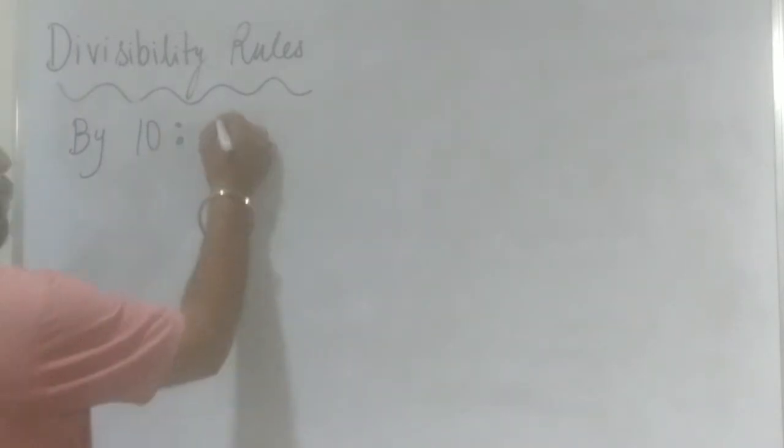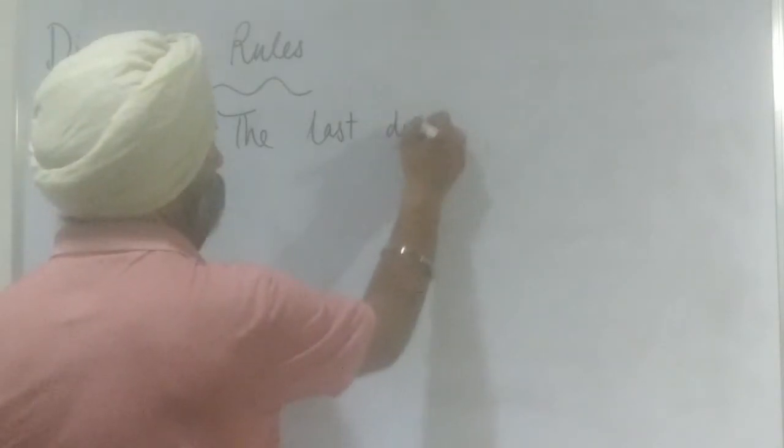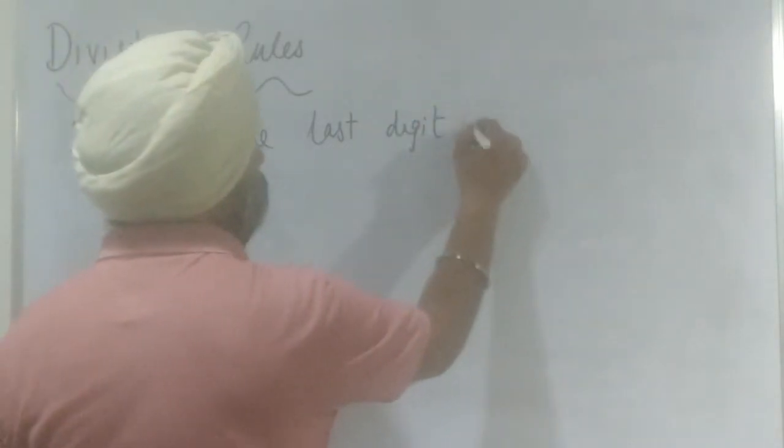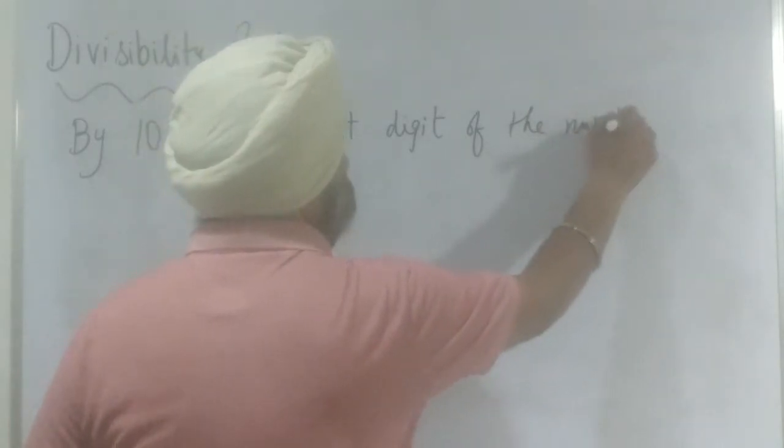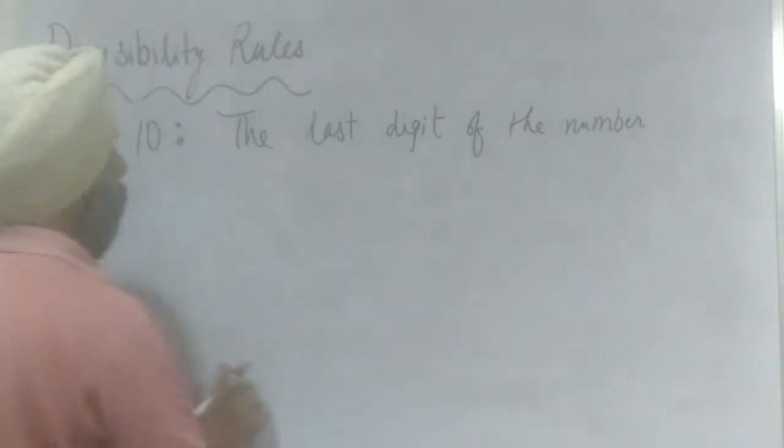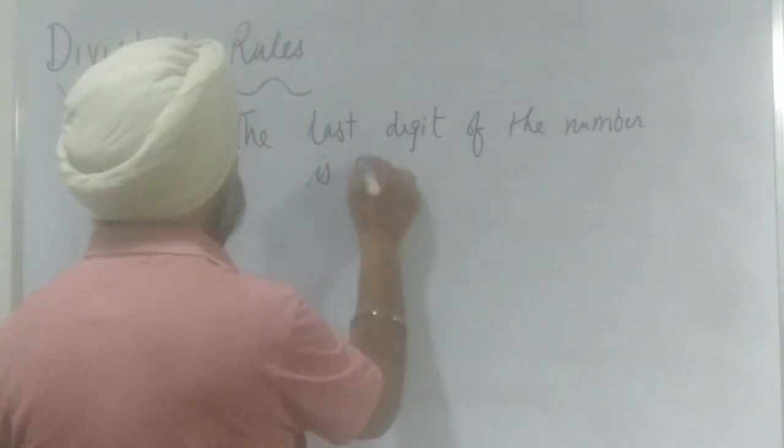So, what is the last digit? Look at the last digit of the number. We have to know that the last digit is 0.